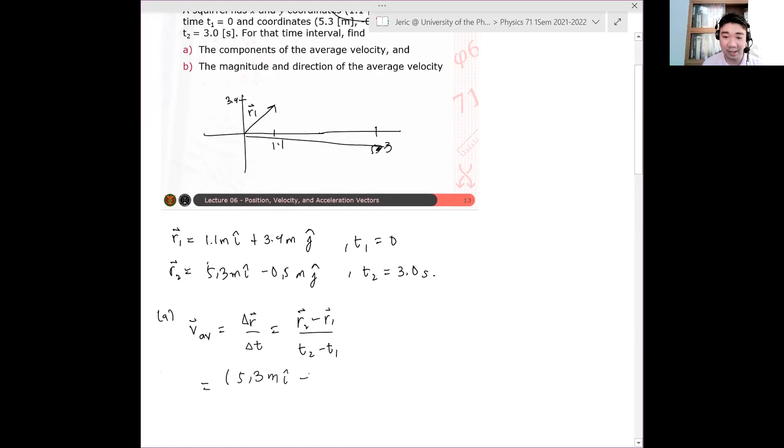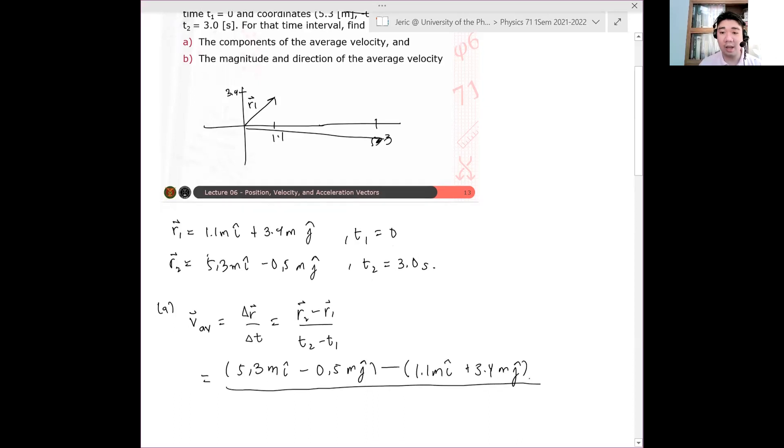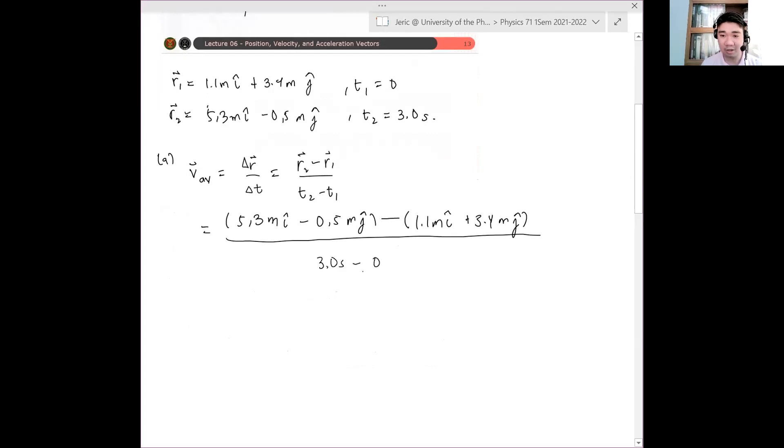This should be 5.3 meters i-hat minus 0.5 meters j-hat minus the quantity 1.1 meters i-hat plus 3.4 meters j-hat. All over 3.0 seconds. And when you do that, the result is 4.2 i-hat minus 3.9 j-hat quantity meters divided by 3 seconds.